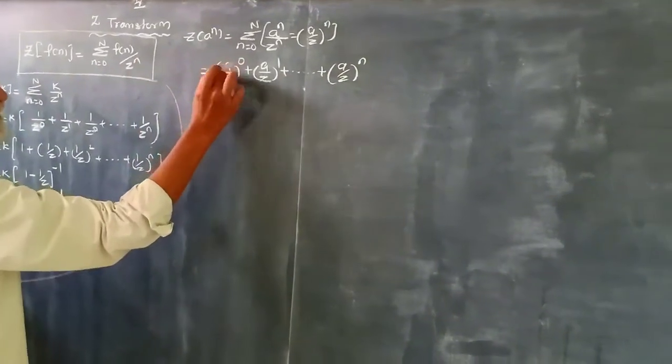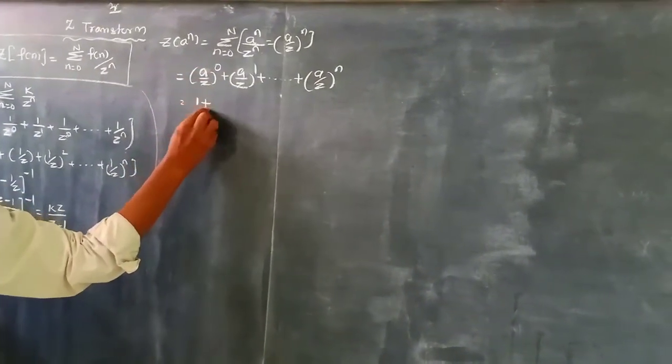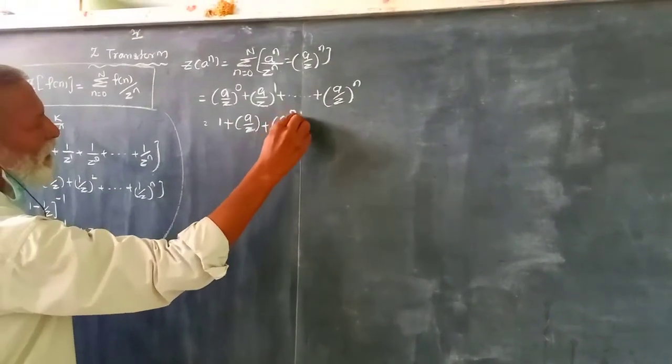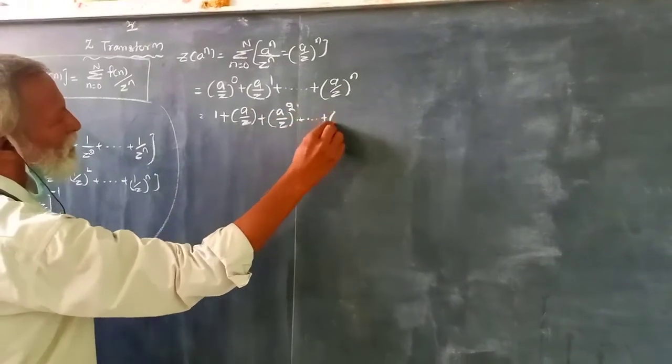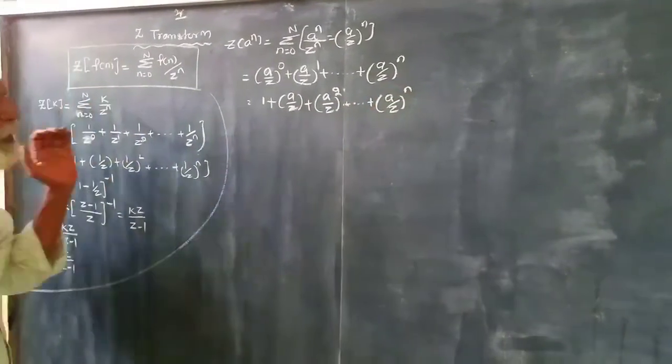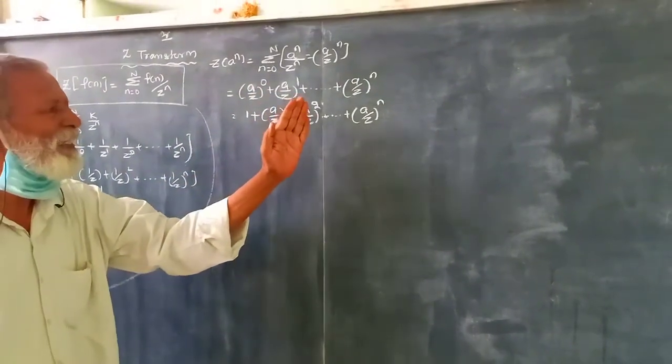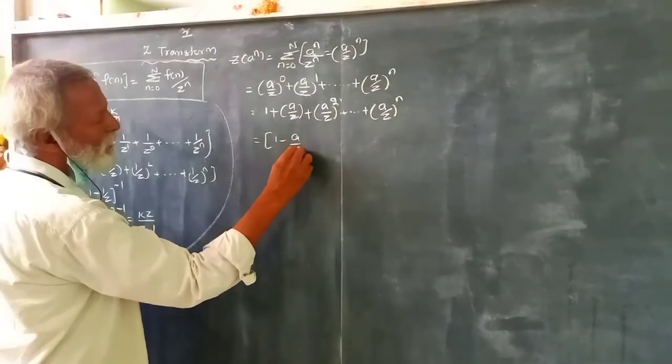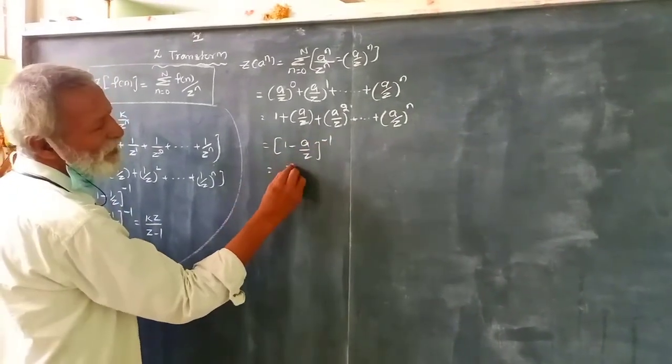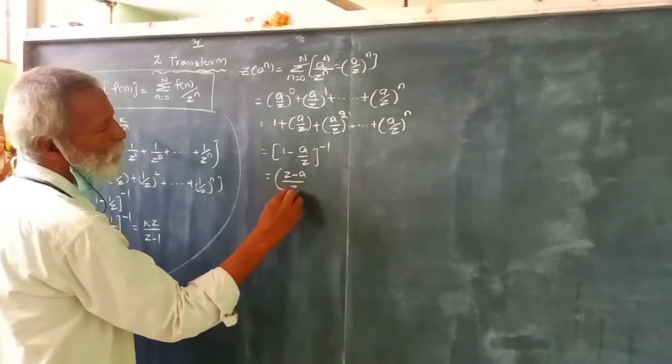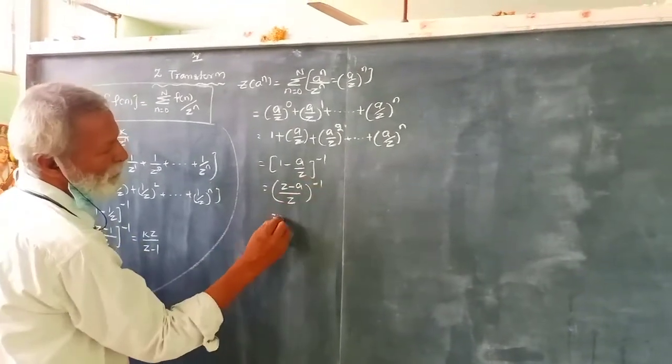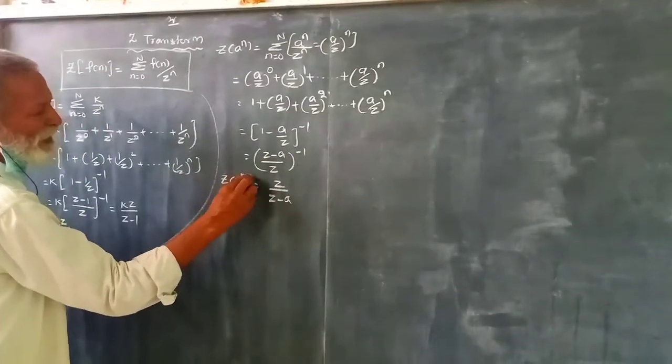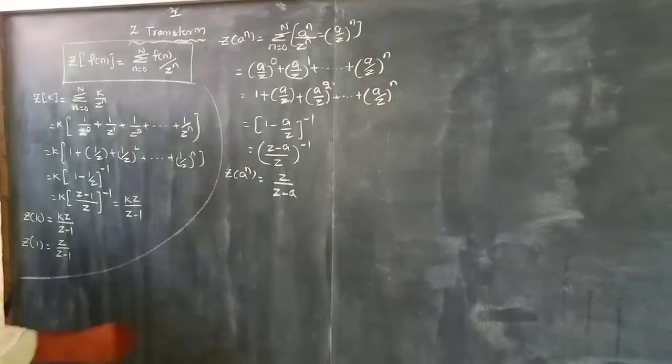This is 1 + a/z + (a/z)² + (a/z)³ and so on. Using (1-x)^(-1), this equals (z-a)/z)^(-1) = z/(z-a). So the Z transform of a^n is z/(z-a).